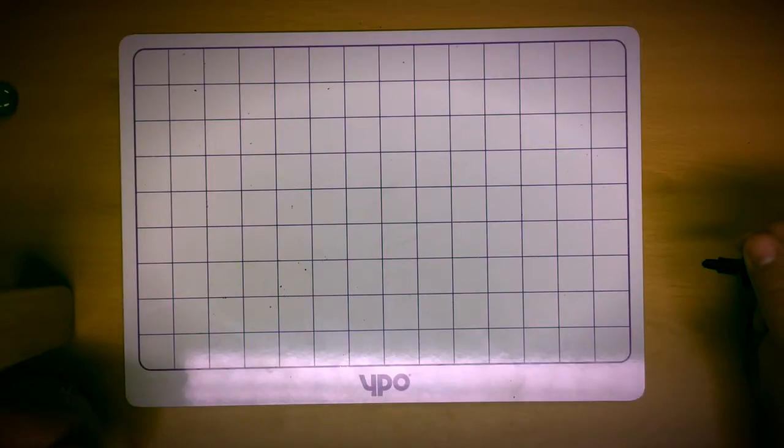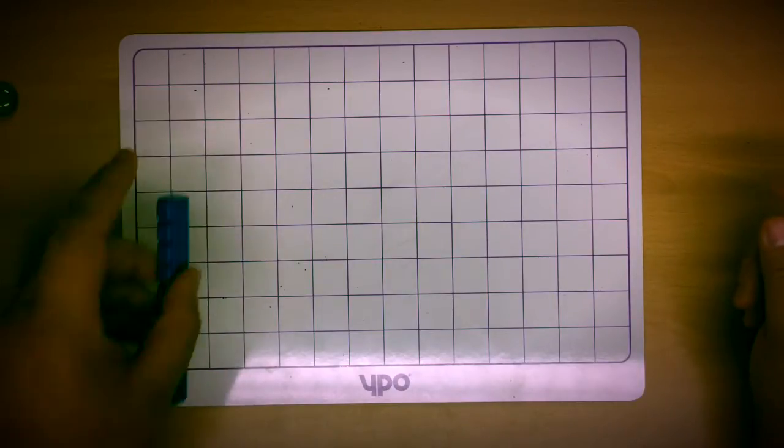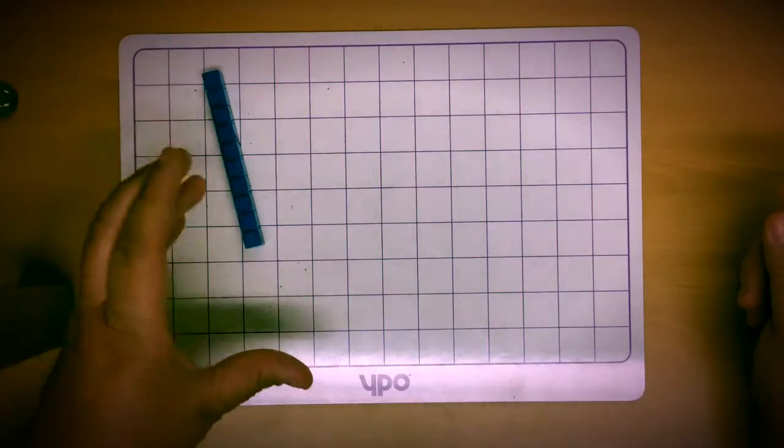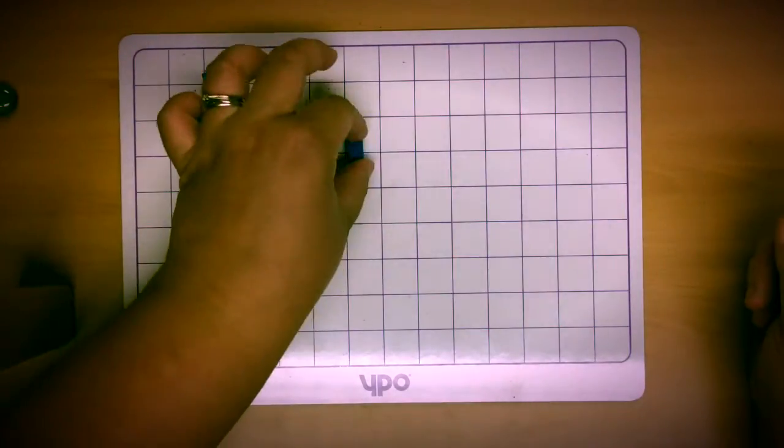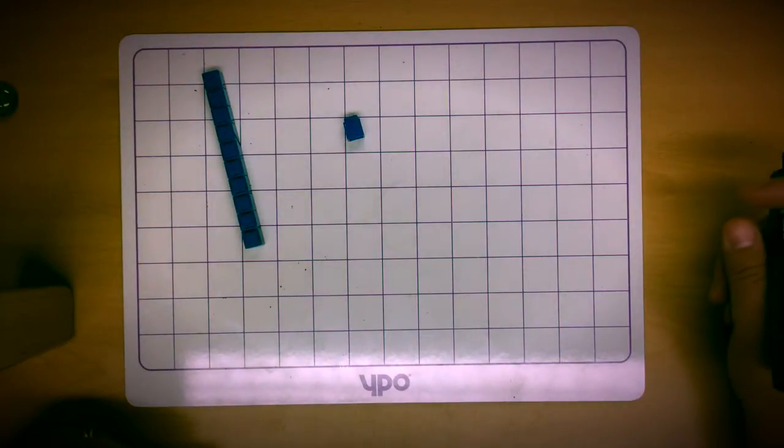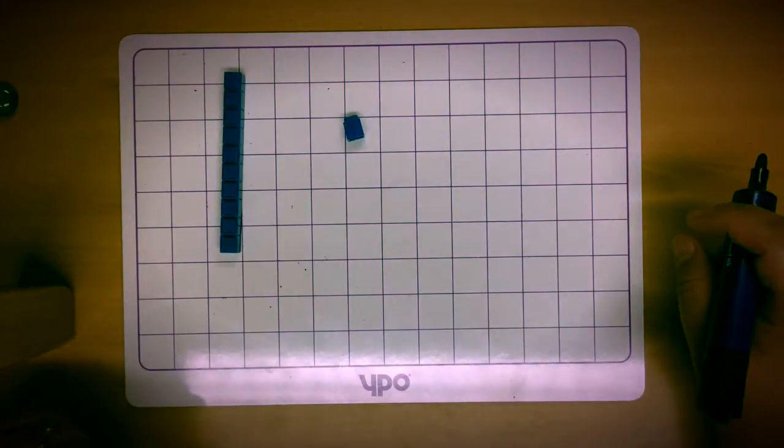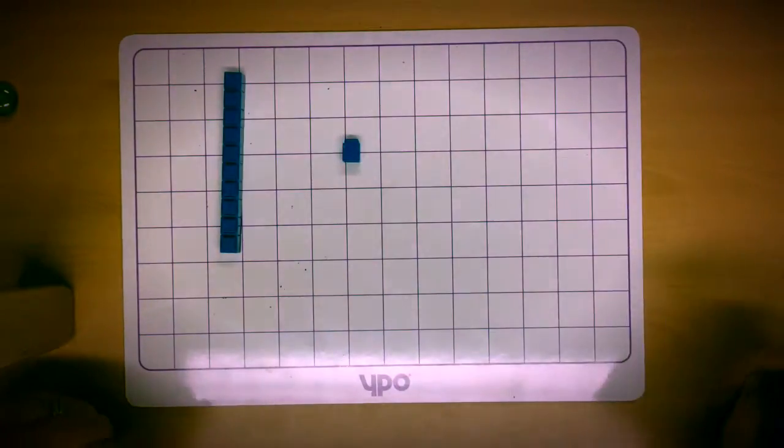The method that we use begins using equipment in a practical way that we call base ten. This consists of sticks that are made up of ten separate little cubes joined together and little one cubes that are by themselves. This helps the children see the difference between the tens numbers in a number and the ones part of a number.